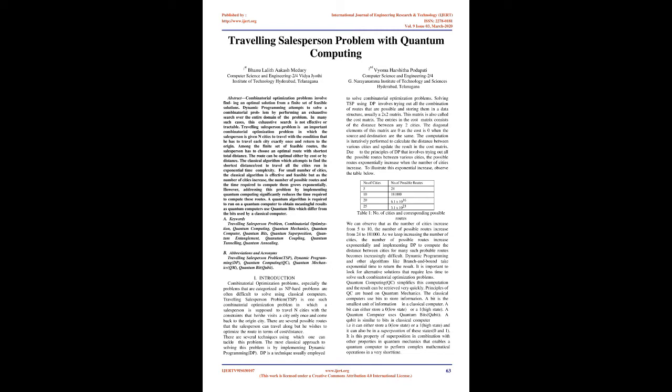The Traveling Salesperson Problem is an important combinatorial optimization problem in which the salesperson is given n cities to travel, with the condition that he has to travel each city exactly once and return to the origin. Among the finite set of feasible routes, the salesperson has to choose an optimal route with the shortest total distance. The route can be optimal either by cost or by distance. The classical algorithm which attempts to find the shortest distance or cost to travel all the cities runs in exponential time complexity.